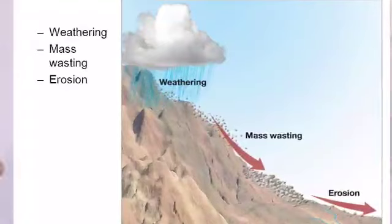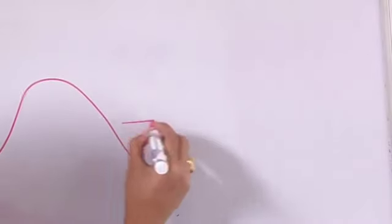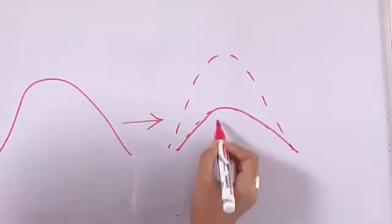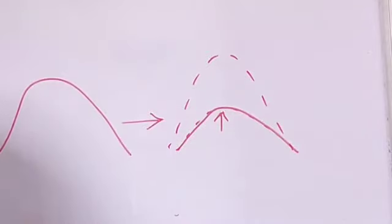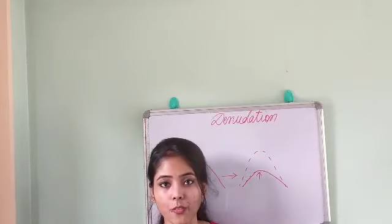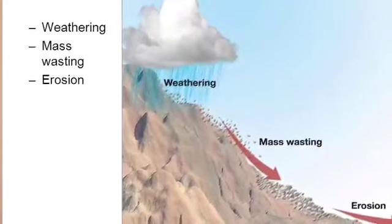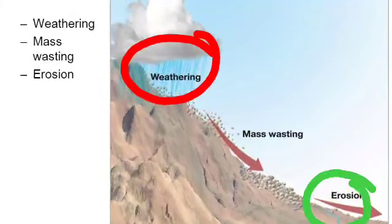Let me give you the general concept of denudation. Previously, a landform was at a certain height, but after the denudation process — which is a continuous process — the landform will be eroded away and its structure will be lowered down. This is called denudation: when a particular landform is worn down by several processes. The important processes are: number one, weathering; number two, erosion; number three, transportation.